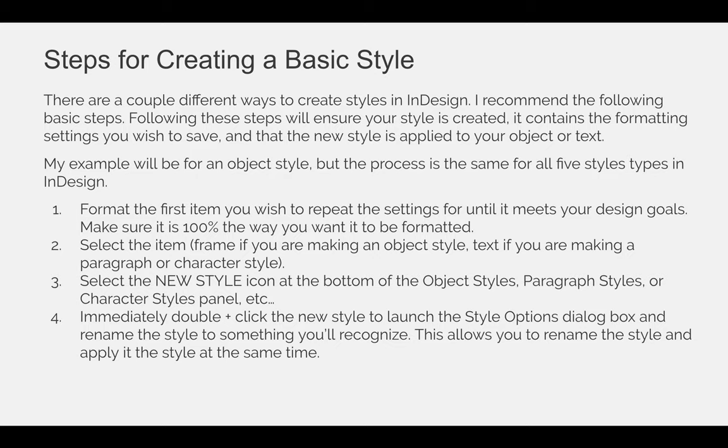Once the first object — say a graphic frame — is formatted perfectly with the right stroke, the right color, and the drop shadow, you can select that item. You want to select the frame if you're making an object style, but if you're making a text-based style like a character style or a paragraph style, you need to select the text. Once you have selected the item, you need to click the new style icon at the bottom of the styles panel you're working with. We're creating an object style, so I'll select the new style icon at the bottom of the object styles panel. For paragraph, character, table, or cell styles you would use those respective panels.